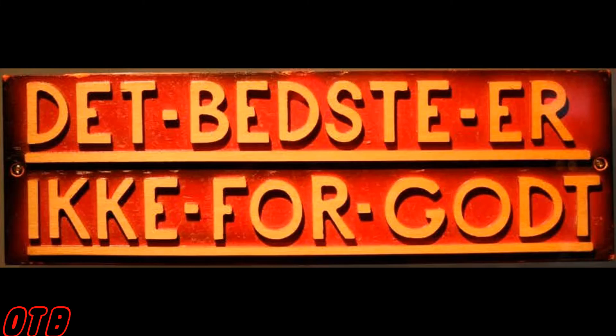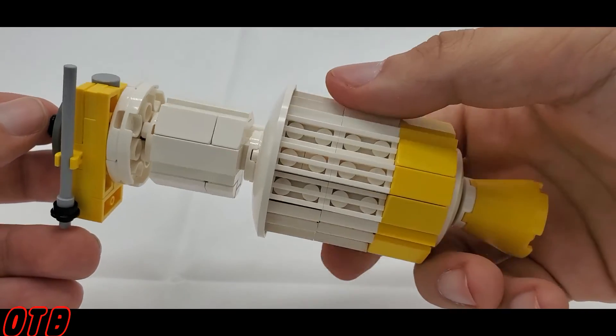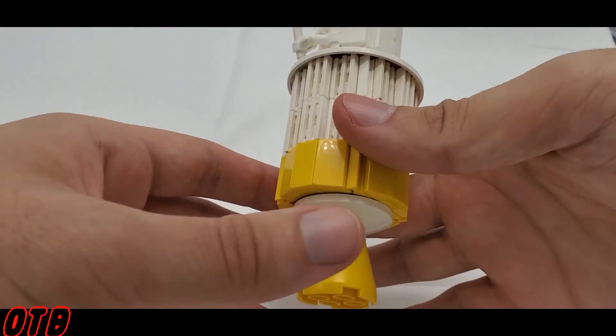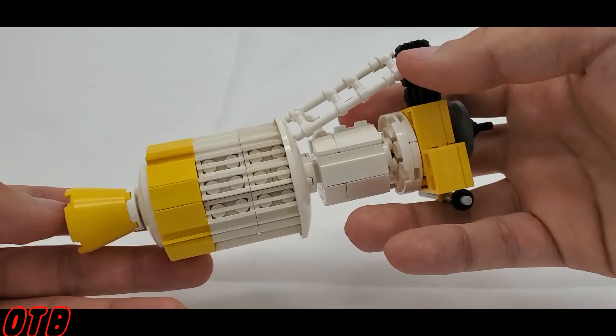Muscovite's build is incredibly sturdy, by the way. It doesn't come with a stand, but it can hold up on its own, or you can display it in the Space Shuttle as well.